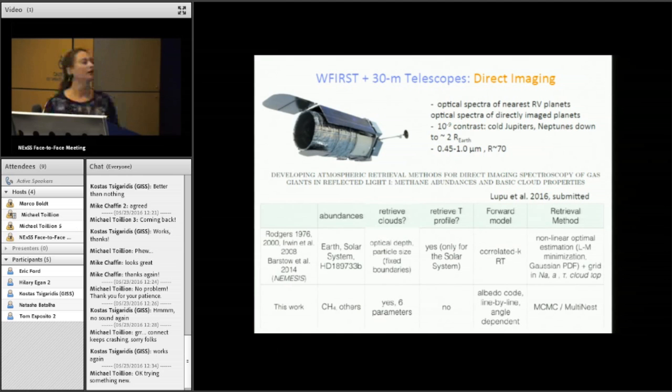Right now, the only other retrieval scheme that looks at reflected light is the Nemesis group at Oxford. There are many differences between our technique and theirs. We use different Bayesian retrieval methods. They do nonlinear optimal estimation, and ours is better for very degenerate and non-Gaussian posteriors. Also, they retrieve the thermal profile, we don't. But we are trying mostly to have a forward model that couples the cloud parameters with the methane abundance, and we can add later on other molecular abundances. But for the band pass that we have in mind here, methane is the main absorber, so that's why we're focusing on it now.